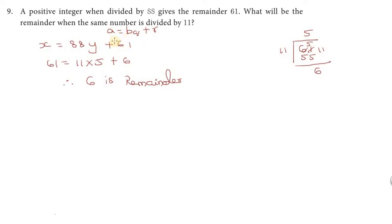Now we need to find the remainder when 61 is divided by 11. 61 divided by 11 equals 5, so 61 equals 11 times 5 plus 6.